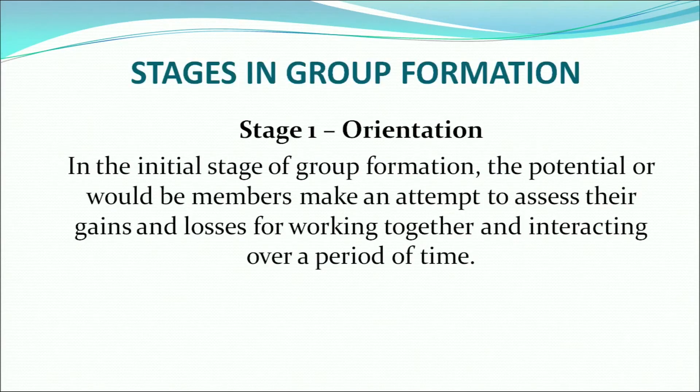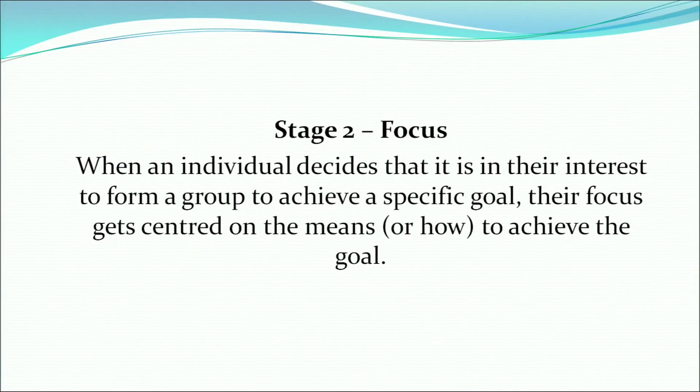How are groups formed? Initially, the first stage is orientation. In this stage, the potential or would-be members make an attempt to assess their gains and losses for working together over a period of time. When a person feels their needs are similar to others', they are oriented toward the other members. The second stage is focus: when an individual decides it is in their interest to form a group to achieve a specific goal, their focus gets centered on the means to achieve that goal.